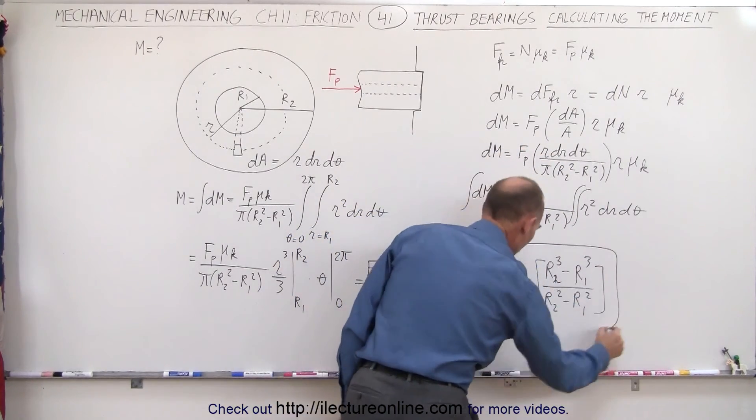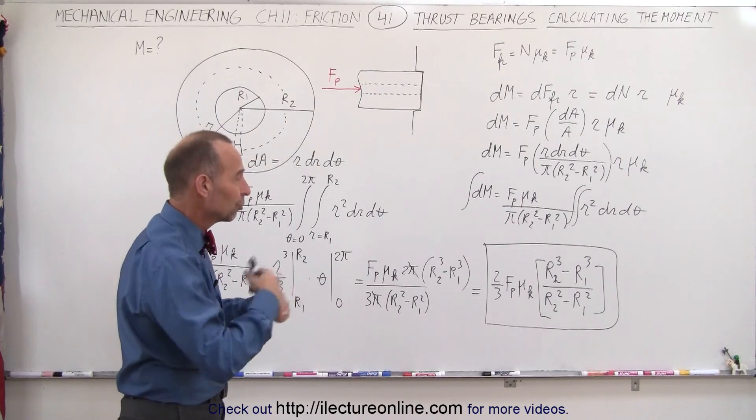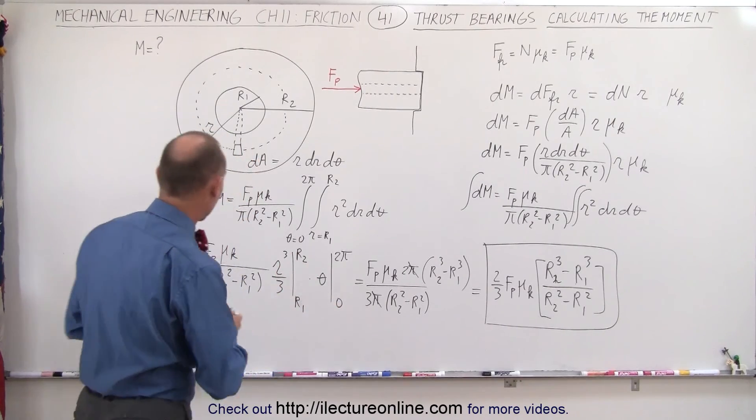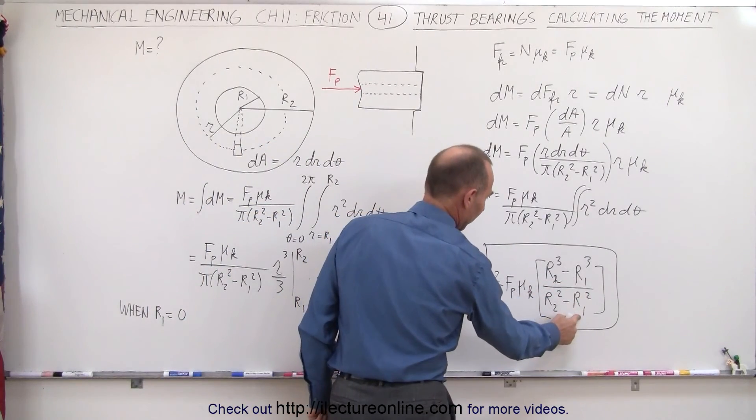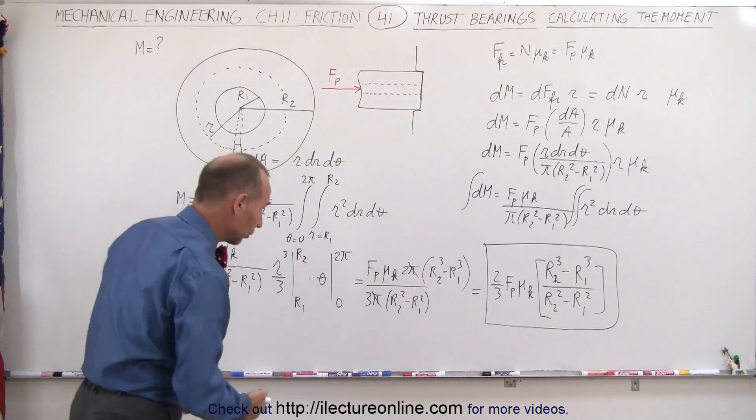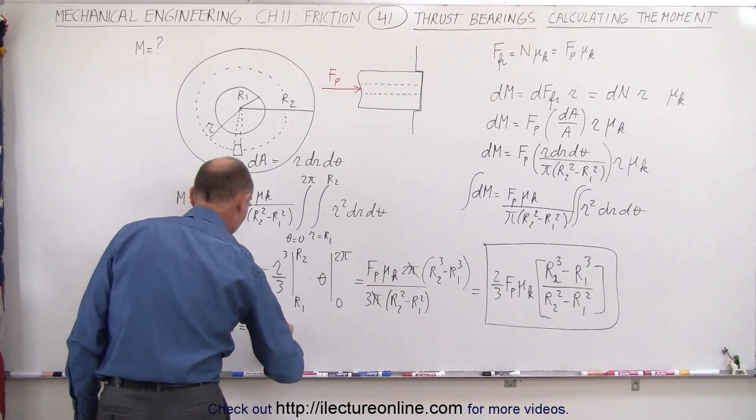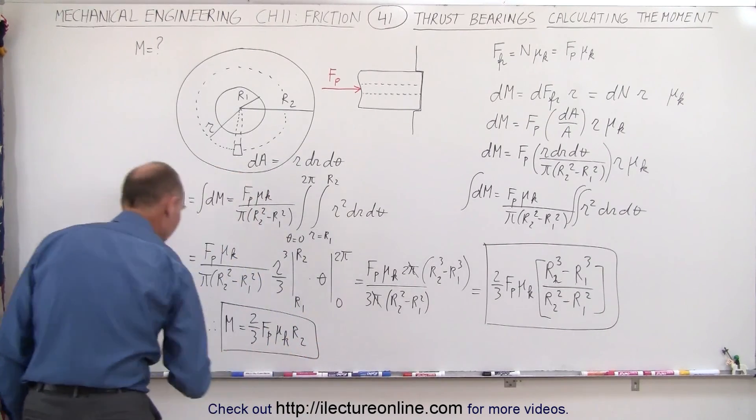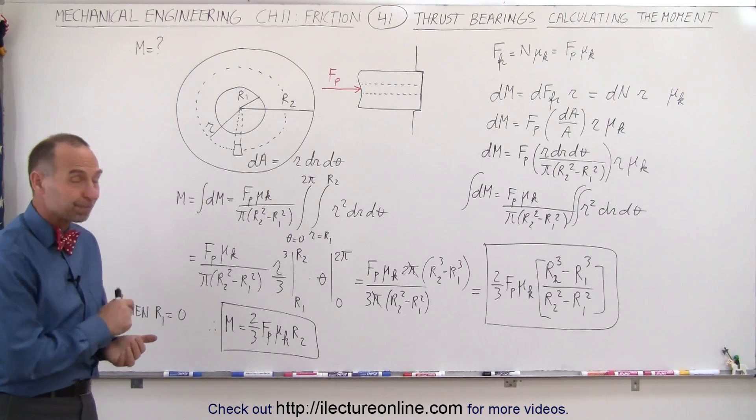And so this here becomes the moment required to overcome the friction. So to keep the axle turning, you will have to apply that much moment in order to compensate for the friction. Now, what happens to that equation when r1 becomes 0? So when r1 equals 0, then of course this drops out, this drops out, and then r2 cubed divided by r2 squared simply becomes r2 by itself, no exponent. So that means that therefore the moment then reduces to 2 thirds the force of the push times mu sub k times r sub 2, or simply the radius of the axle. So those are the two equations that will come in handy when we start doing some problems involving thrust bearings. And that's how it's done.